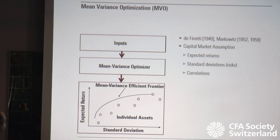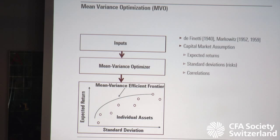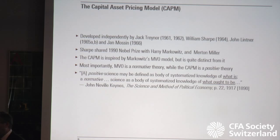When talking about mean-variance optimization, you first have to develop inputs called capital market assumptions: the expected return of every asset class, the standard deviation of every asset class, and the correlations among all asset classes. Once you've done that hard work, you put it into mean-variance optimization software and in principle you get an efficient frontier — the software produces this efficient frontier and tells you the trade-off between risk and return.